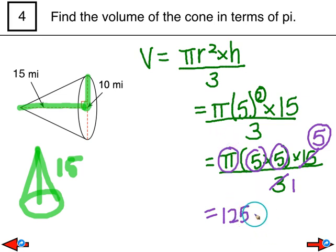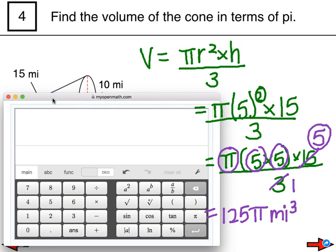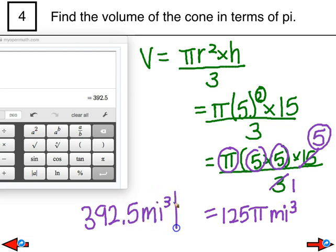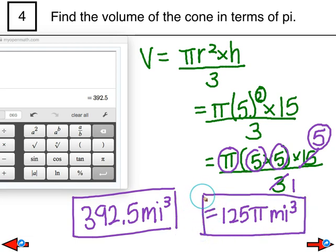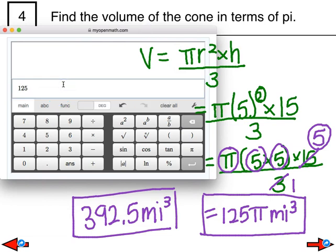So we're left with 5 times 5, which is 25, and 25 times 5 is 125. Don't forget pi — so it's 125 pi miles cubed. We also want to approximate, so using the calculator: 125 times 3.14 gives 392.5. That's the other answer, approximately 329.5 miles cubed. These are the two types of answers, but it depends — did they ask you to use 3.14, or the pi symbol? Simply replace 3.14 with the pi symbol if needed. Please read the instructions so that you know what to do.